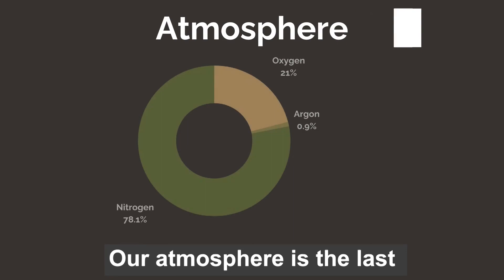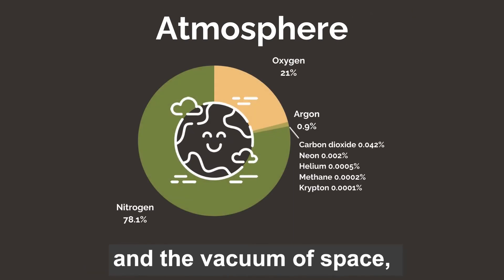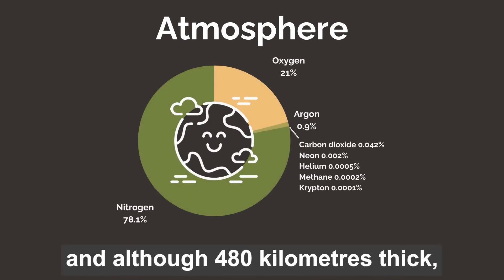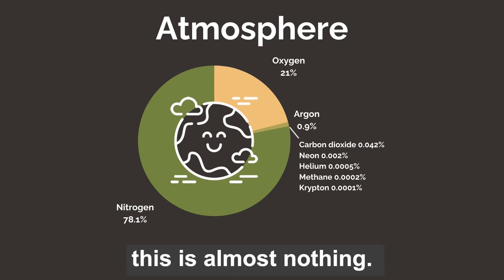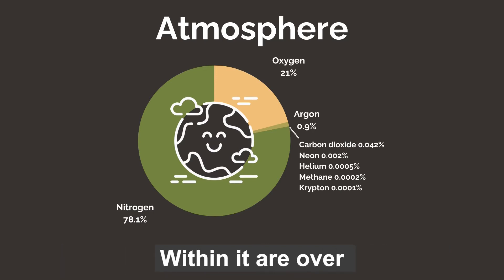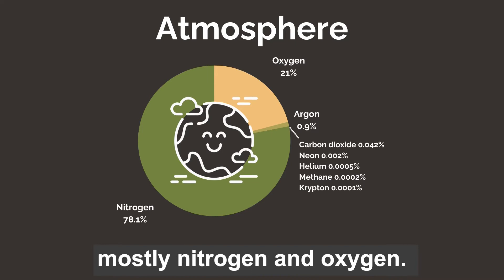Our atmosphere is the last layer of protection between us and the vacuum of space, and although 480 kilometres thick, when viewed on a planetary scale this is almost nothing. Within it are over 5 quadrillion tonnes of gas, mostly nitrogen and oxygen.